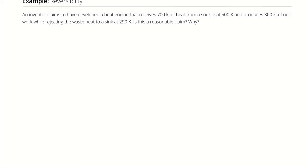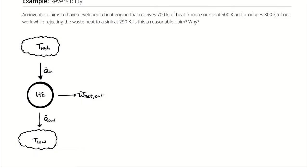Well, we have a heat engine, and we know that the high side temperature is 500 Kelvin, and that the low side temperature is 290 Kelvin. It receives 700 kilojoules of heat transfer in, and produces 300 kilojoules of net work.